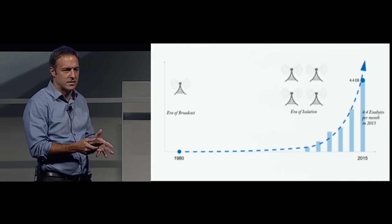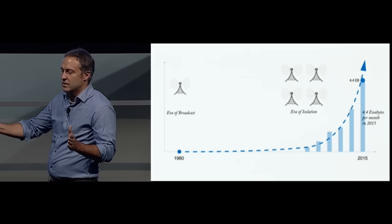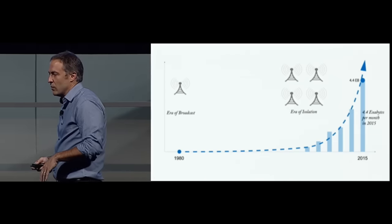This era of isolation was smaller cells, directional radiation, and frequencies that were separated from each other. And it's worked quite well.